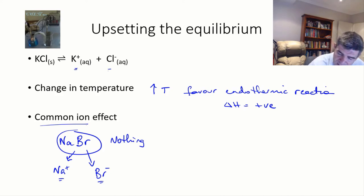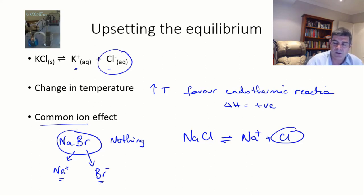But if instead I was to add sodium chloride, what we have here when this dissociates is sodium ions and chloride ions. And the chloride ions here are common. So this is what we call a common ion effect. When we add another source of the same ions, we do make a change in the equilibrium.